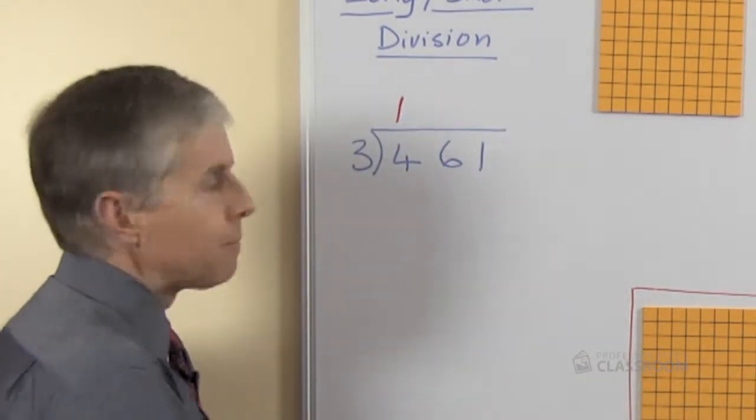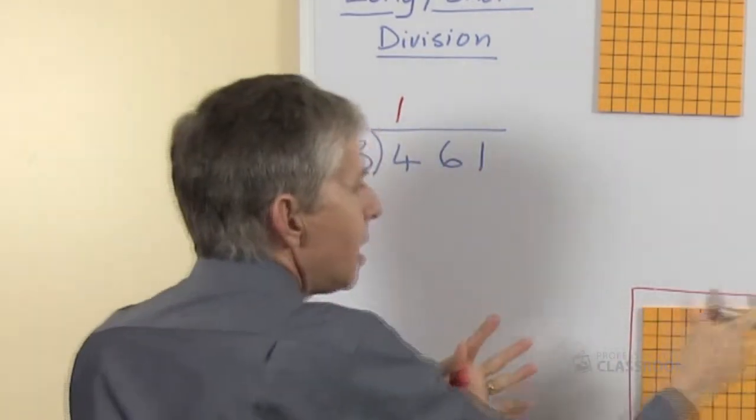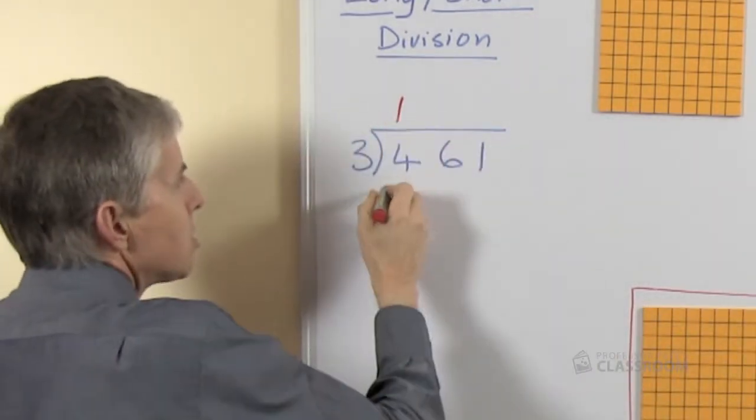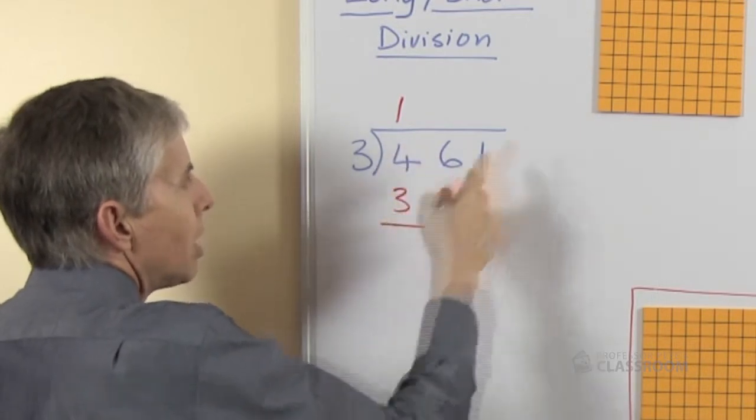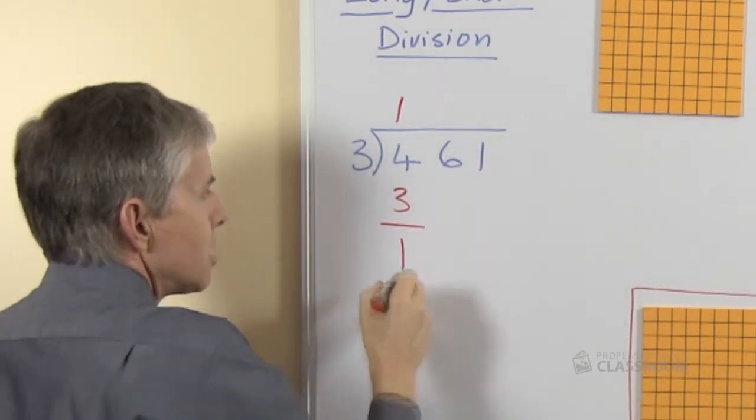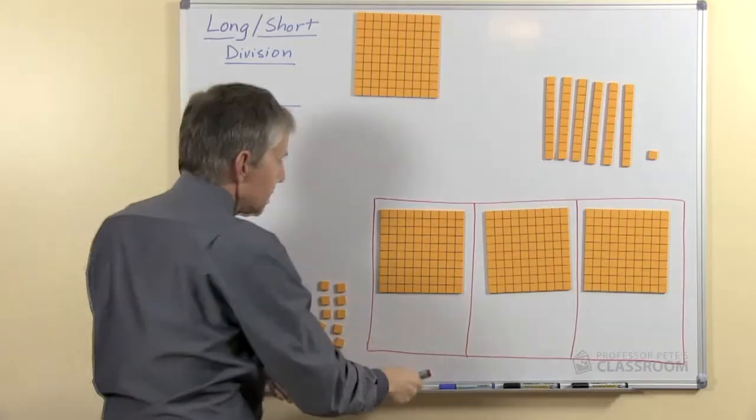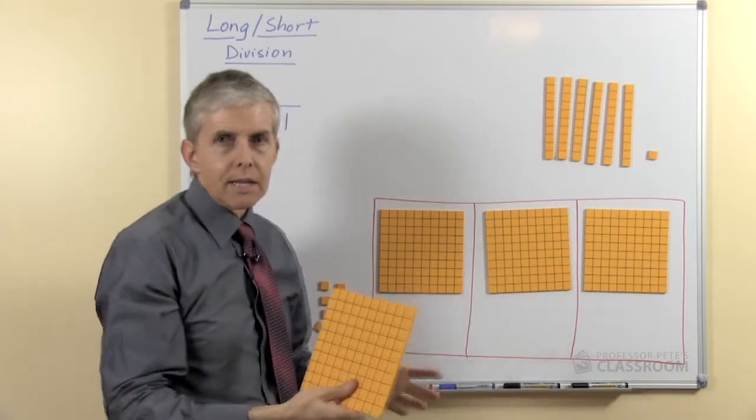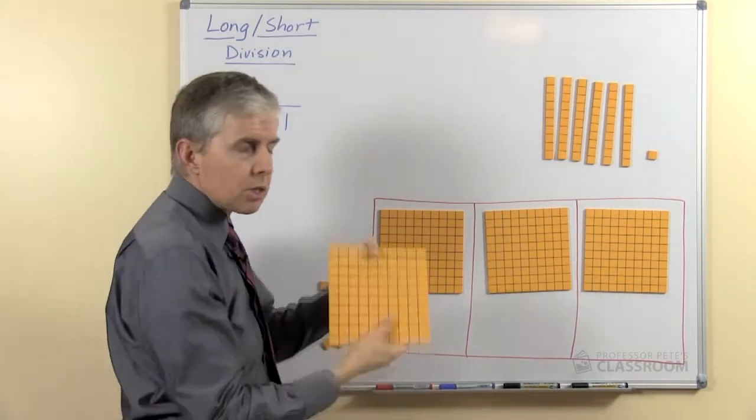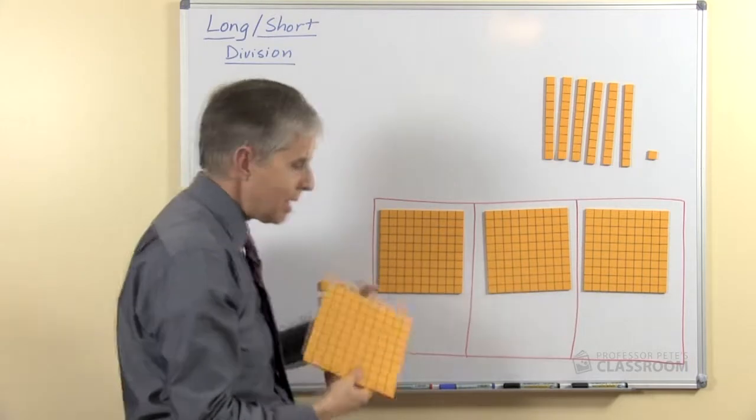so we write that at the top and then we multiply to work out how many we have shared, 1 times 3 is 3. We'll put that under the 4 so we can take it away and look at how many are left, of course there's 1 left. So here's another hundred, we can't share this one because that wouldn't be fair, all our shares have to be equal. So we're going to swap this or trade it,